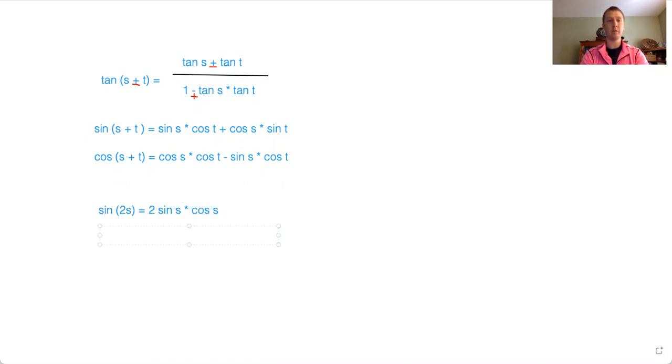What about cosine, cosine of twice some angle? Well, then we have cosine of the angle times cosine, that's cosine squared, right? Minus sine s times sine s, that's sine squared. So cosine squared of s minus sine squared of s. That's pretty nice.